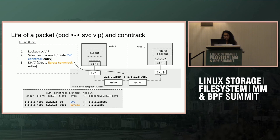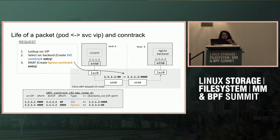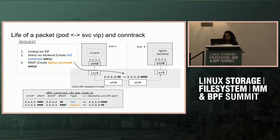The next step is destination translation: it translates the service VIP from 2.2.2.2 to the selected backend IP address 1.1.1.2. Correspondingly, it creates an egress entry highlighted in orange, which records an egress flow where the source IP is 1.1.1.1 connecting to the backend IP 1.1.1.2. This egress entry will be used to track the packet replies from the NGINX backend back to the client.